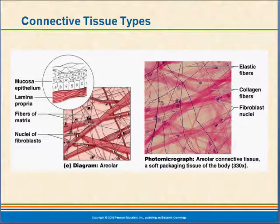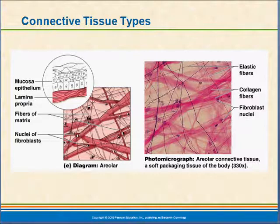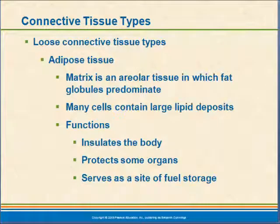We have finished our previous discussion with areolar connective tissue and we're going to talk now about some of the other proper connective tissue types. Our next connective tissue is also a loose connective tissue — it is adipose. Adipose is fat tissue; it is a matrix with areolar connective tissue and adipose tissue cells which hold globules of fat.